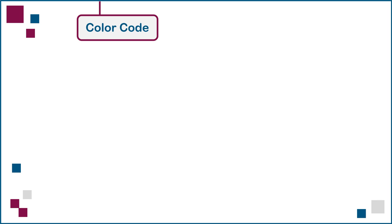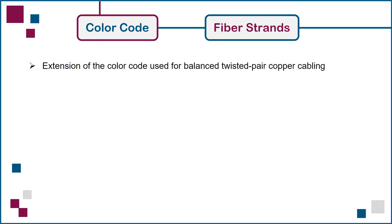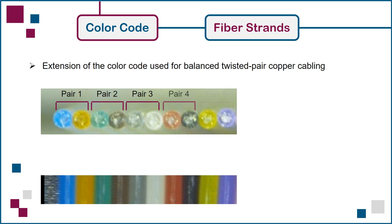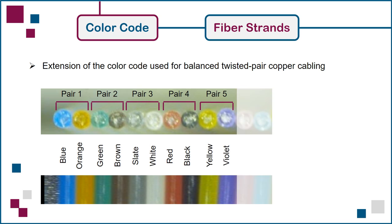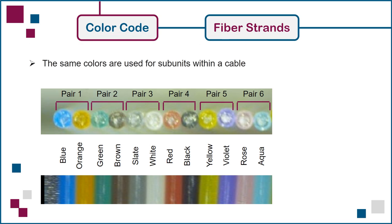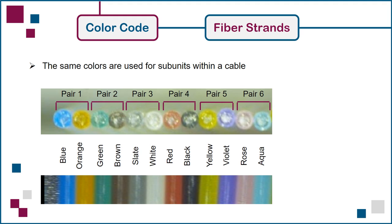The color code used to identify and sequence individual fiber strands is an extension of the color code used for balanced twisted pair copper cabling. The first 5 pairs, or 10 fibers, use the same colors as their copper counterparts, but an additional 2 colors, rose and aqua, were initially required, because fiber cables contained strand counts in multiples of 12, such as 24 fiber and 48 fiber, versus 100 pair and 300 pair copper cables. The same colors are used for subunits within a cable. For example, a 96 fiber loose tube cable may contain 8 buffer tubes, each containing 12 fiber strands. Tube number 1 would be blue, tube number 2 would be orange, and so on. So the same color code identifies both the sequence of the fibers and the sequence of the tubes containing the fibers.